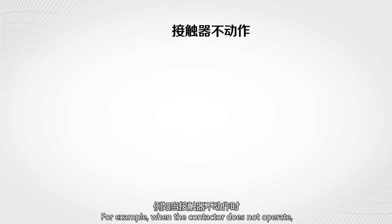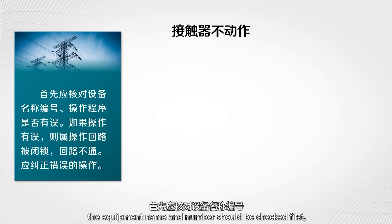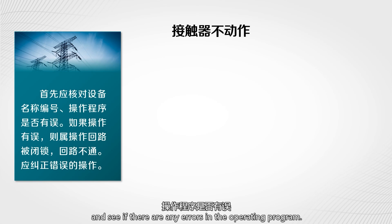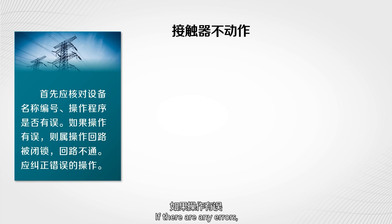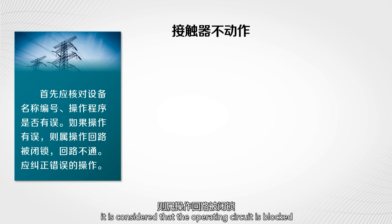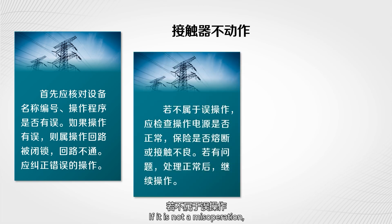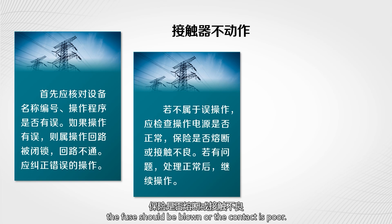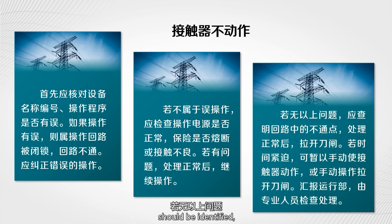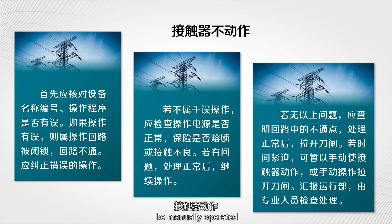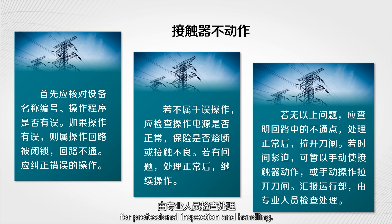For example, when the contactor does not operate, check the equipment name and numbers first to see if there are any errors in the operating program. If there are errors, it is considered that the operating circuit is blocked and the circuit is not connected — correct the incorrect operation. If it is not a mis-operation, check the operating power supply for normalcy, check for blown fuses or poor contact. If no problems are found, identify the disconnection point in the circuit and open the knife switch after normal handling. If time is tight, the contactor can be manually operated or the knife switch manually opened, and the operation department should be reported for professional inspection.